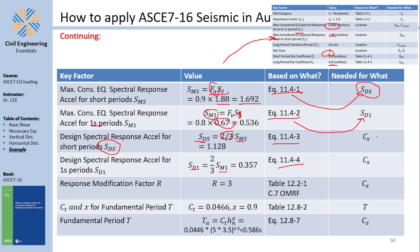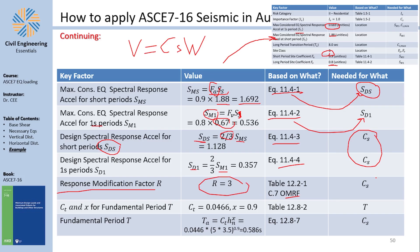The response modification factor R = 3, from Table 12.2-1, the largest table in the code. I chose system C7 — an ordinary moment-resisting concrete frame. There are three types: ordinary, intermediate, and special. Choosing an ordinary frame gives R = 3. This is needed to find Cs.